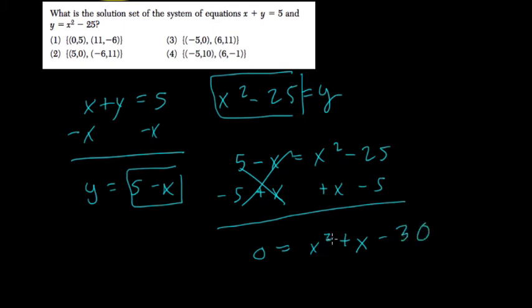So what factors of 30, if you add them, get positive 1? Well, 6 times 5 is 30. So positive 6 times negative 5 works because if we multiply those two, we get negative 30, and if we add them, we get plus 1. This equals 0.